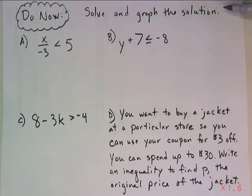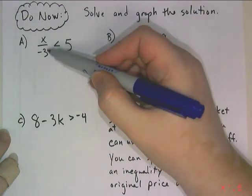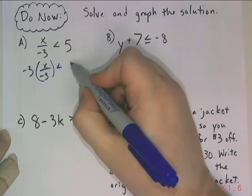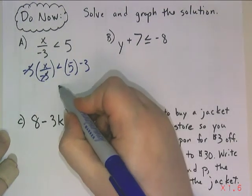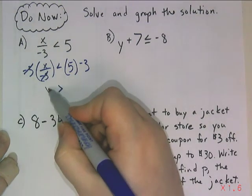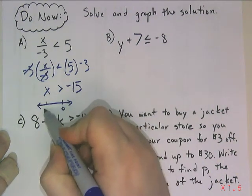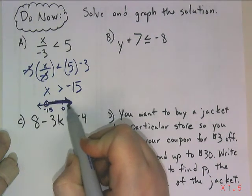To conclude, there are four do-now problems: solve and graph all four, including the word problem. For the first, x divided by negative 3 — multiply both sides by negative 3, which cancels, but since I multiplied by a negative, I change the inequality direction. So x > -15, graphed with an open circle on negative 15 and an arrow to the right.